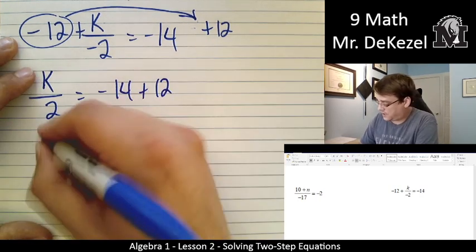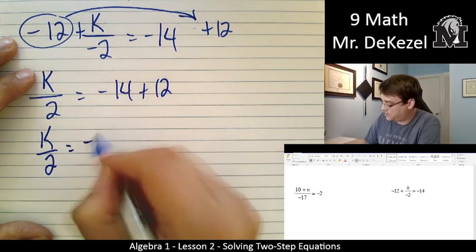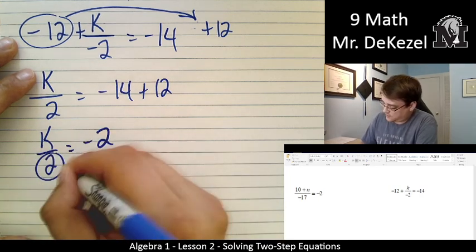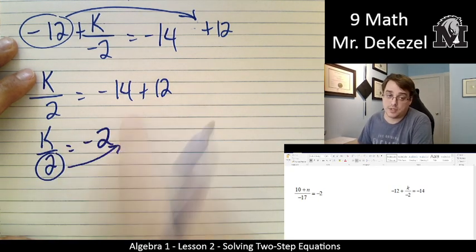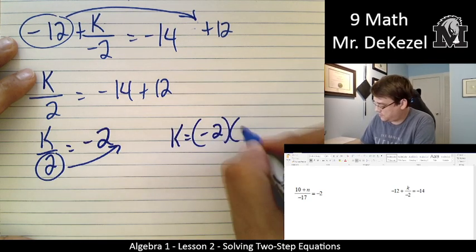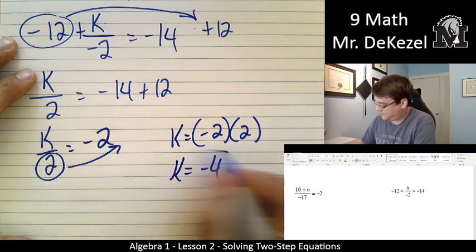So k divided by 2 would be equal to minus 2. Minus 14 plus 12 is minus 2. Take the 2 on the bottom. We move it up to the top on the other side. k is equal to minus 2 times 2. k is equal to minus 4.